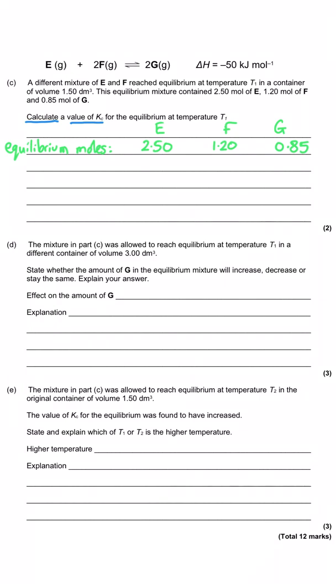And so we've been given equilibrium moles of each of those three reactants, but what we need to remember is Kc uses equilibrium concentration values. So the first thing that we need to do for all three of these numbers is divide equilibrium moles by equilibrium volume, or just the volume of the container generally, which is 1.5 dm cubed. So that's nice and easy, because concentration is moles divided by volume, and we know that because it's moles per decimetre cubed.